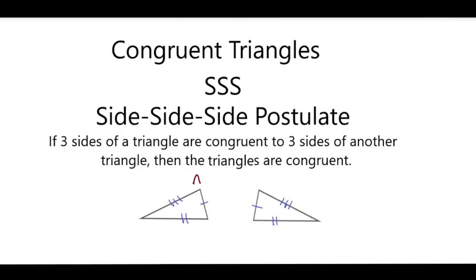We have these two triangles here. Let's say they're triangle ABC and XYZ. We would say triangle ABC is congruent to triangle XYZ.